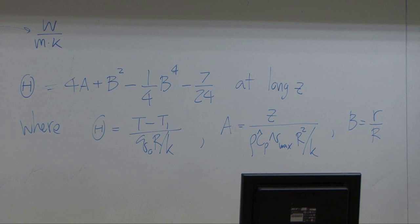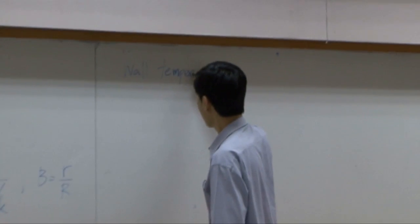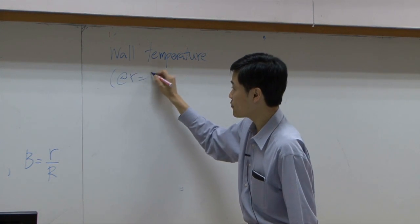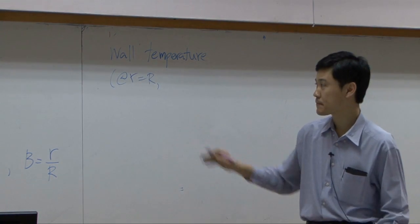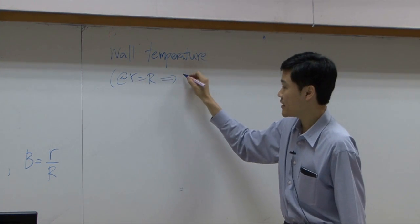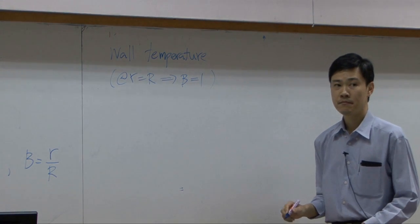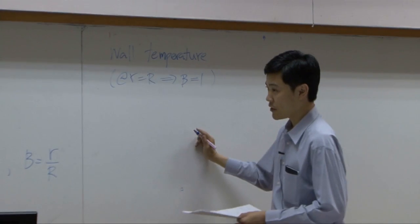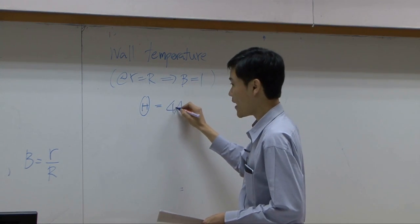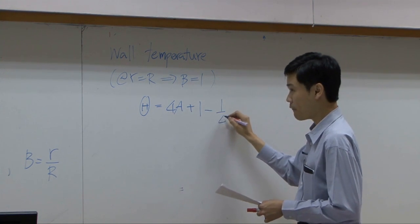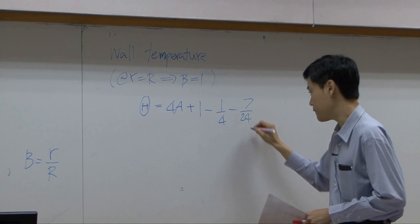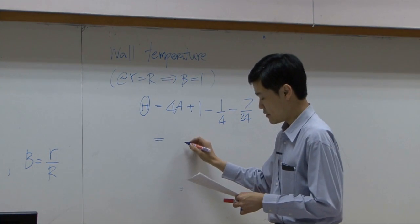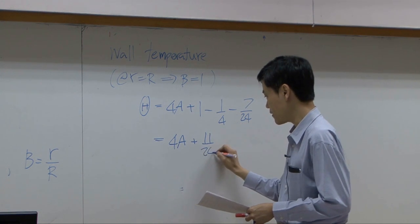If you calculate wall temperature from this equation, at wall temperature, it means we look at R equal to capital R. If R equal to capital R, it means we look for B equal to 1. B is just another dimensionless number. Plug it back into the original equation. You get theta equal to 4A plus 1 minus 1/4th minus 7/24th. Or it is equal to 4A plus 11/24th.